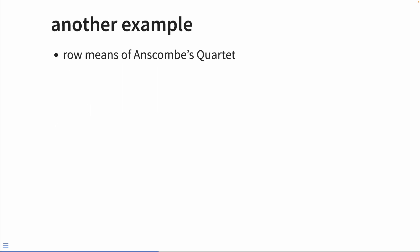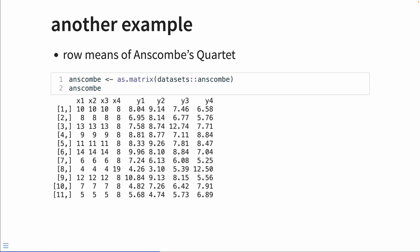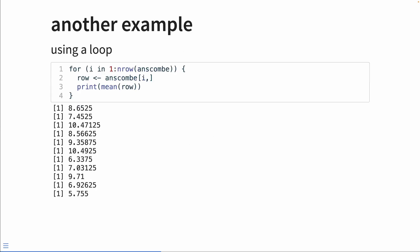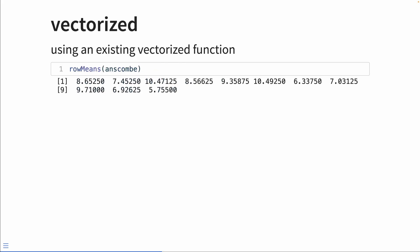Let's take another example using Anscombe's quartet, trying to find the average of each row in a matrix. This can be accomplished fairly simply using a for loop where we subset the matrix by its row number and then calculate the mean for that row. Or we can use an existing vectorized function — in this case, rowMeans(). This is going to be far faster than a for loop.